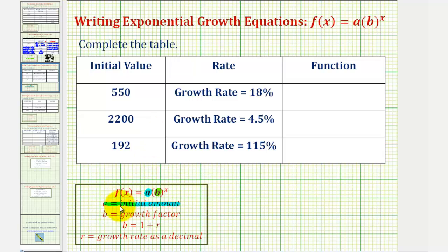the base, also called the growth factor, is equal to one plus r, where r is the growth rate expressed as a decimal.